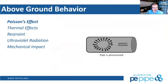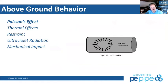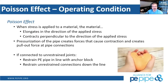Now we transition from site pipe management to above-ground behavior. We'll look at what the material properties of polyethylene do above ground and how we control those through installation. We'll cover Poisson's effect, thermal effects, restraint, ultraviolet radiation, and mechanical impact.